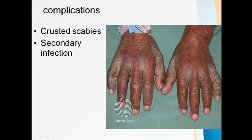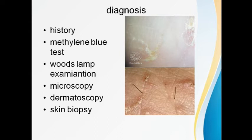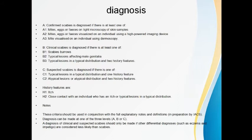Apart from crusting, secondary infection is also present. If scabies burrows and lesions exist, there are chances of infection by commensal bacteria. Staphylococcal or streptococcal infections are quite commonly seen in scabies patients, specifically in the pediatric age group where children tend to scratch lesions too much, causing abrasions and leading to secondary infection.